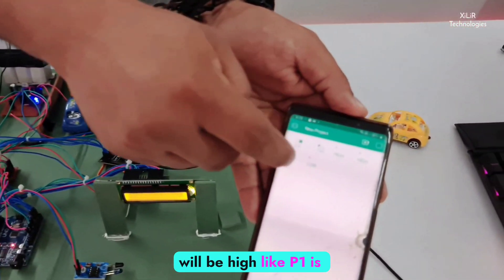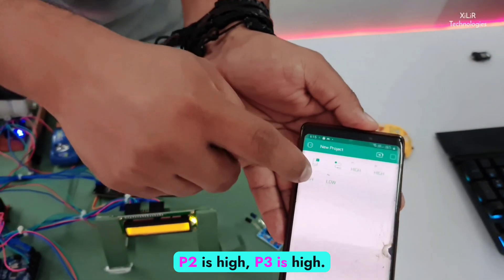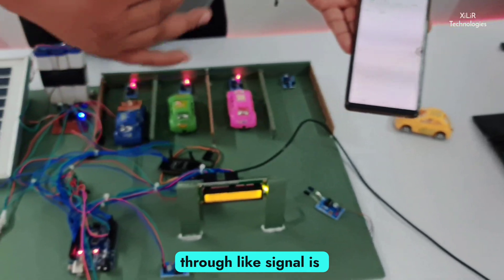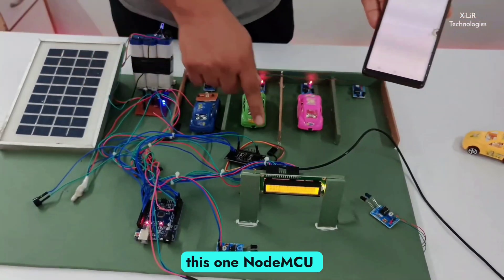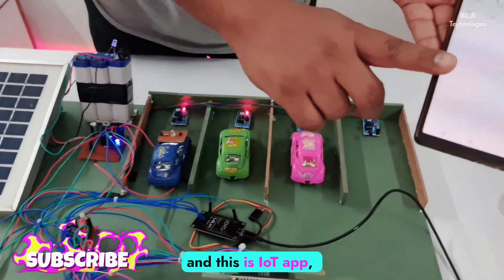And all these things will be high. Like P1 is high, P2 is high, P3 is high. And this is going through like signal is coming from IoT module, this one NodeMCU. And this is IoT app, Blink app.